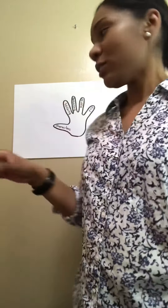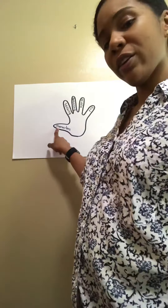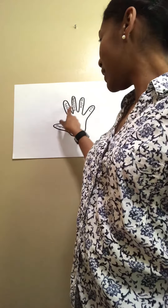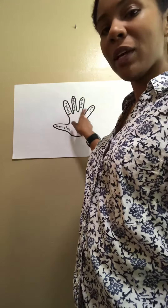Hey boys and girls, Miss Boyd is back. I hope you enjoyed that story of Red Riding Hood. Now let's think about those five fingers and how we're going to use them. So we have our characters, setting, beginning, middle, and end of the story.